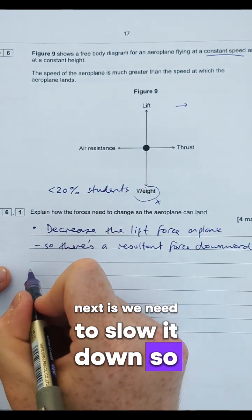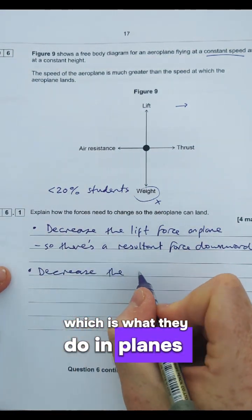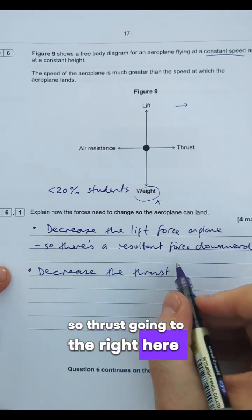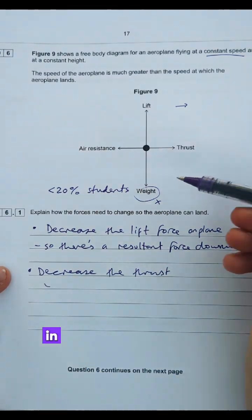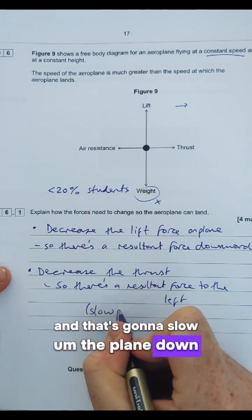Next is we need to slow it down. So we could decrease the thrust which is what they do in planes. So thrust going to the right here and that's going to mean there's a resultant force in the left hand direction and that's going to slow the plane down which is what we want.